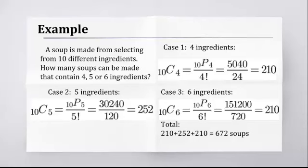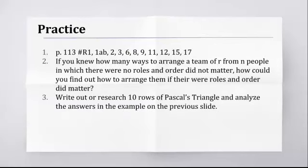Practice for today. We've got a bunch of questions there. Some of them are very quick. R1, obviously, is a good describing question. It makes you think about what you're doing here, the number of ways. I mean, there's quite a few, but some of them are very quick. And I added these two. If you knew how many ways to arrange a team of r from n people in which there are no roles and order did not matter, so a combination, how could you figure out how to arrange them if there were roles and order did matter? So how could you get the permutation?